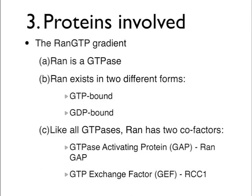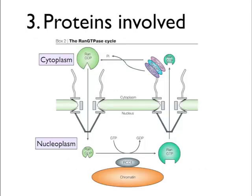Like all GTPases, RAN has two co-factors: the GTPase Activating Protein or GAP, which for RAN is known as RAN-GAP, and the GTP Exchange Factor or GEF, which for RAN is known as RCC1. RAN-GTP is present in very high concentration inside the nucleus, whereas RAN-GDP is in very high concentration in the cytoplasm. This gradient across the nuclear envelope is due to the location of these two co-factors.